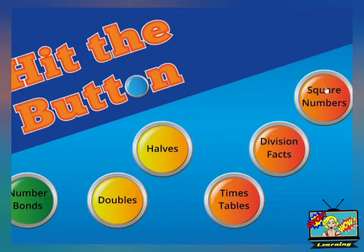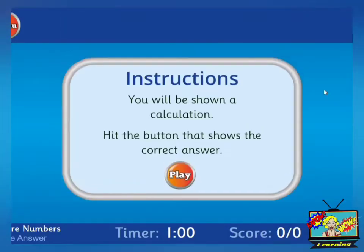But really, this is what we're going to look at. So if you hit square numbers, you've got one minute to play. And the way how you play this is, you've got one minute and it tells you how many you get wrong and how many you get right.